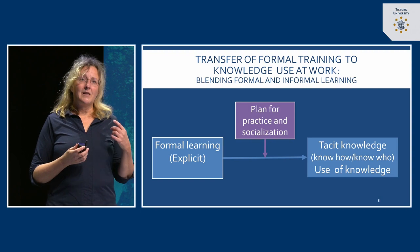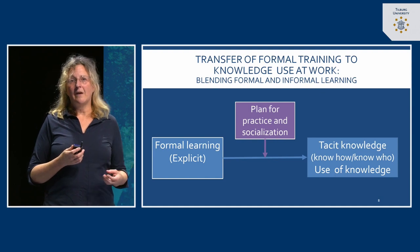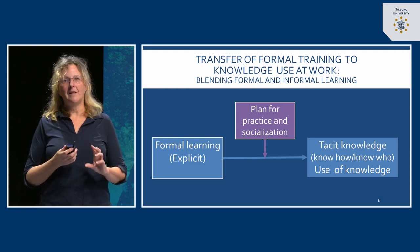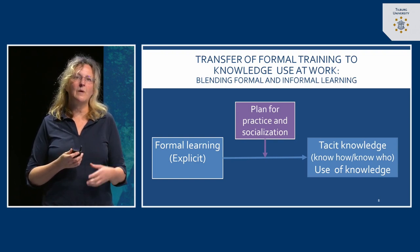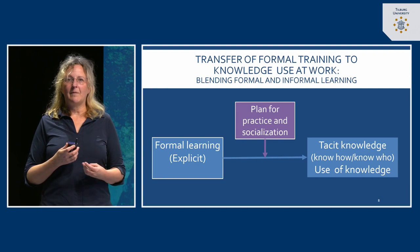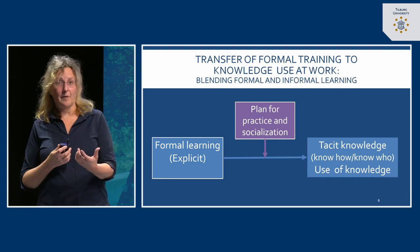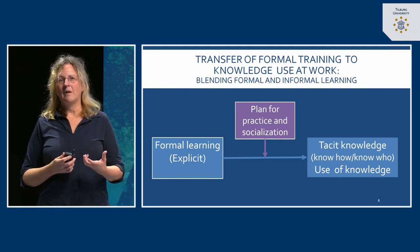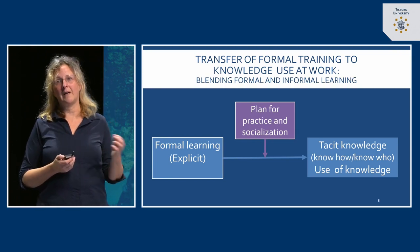A better example would be that the new software is already introduced and all employees are one by one sent to this formal learning. When they come back, they organize together and discuss how to use the new software, where the potential bugs might be, and how to learn to use it better — making it into a social practice environment. The formal learning about the system will be mixed with the reality of the work, leading into tacit knowledge: the know-how and know-who that are really essential if you want people to use the skills in practice.